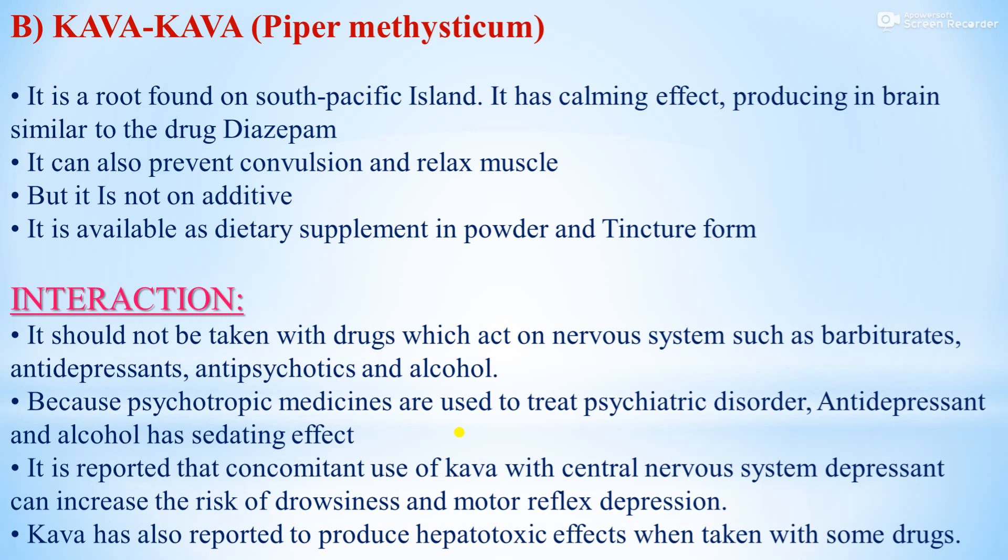The second drug is Kava Kava, also called Piper methysticum. It is a root found on South Pacific islands. It has a calming effect on the brain, similar to the drug diazepam. It can also prevent convulsion and relax muscle, but it is not addictive. It is available as a dietary supplement in powder and tincture form.